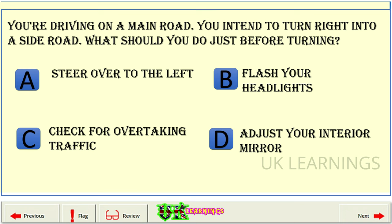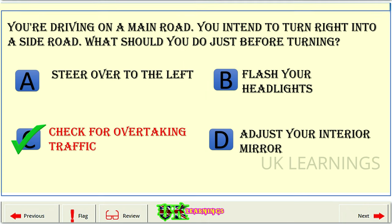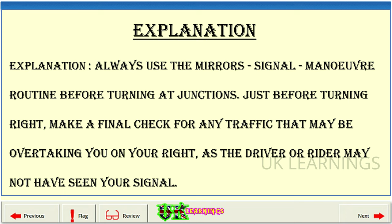You're driving on the main road. You intend to turn right into a side road. What should you do just before turning? A: Steer over to the left. B: Flash your headlights. C: Check for overtaking traffic. D: Adjust your interior mirror. The correct answer is C: Check for overtaking traffic. Explanation. Always use the mirrors, signal, maneuver routine before turning at junctions. Just before turning right, make a final check for any traffic that may be overtaking you on your right, as the driver or rider may not have seen your signal.